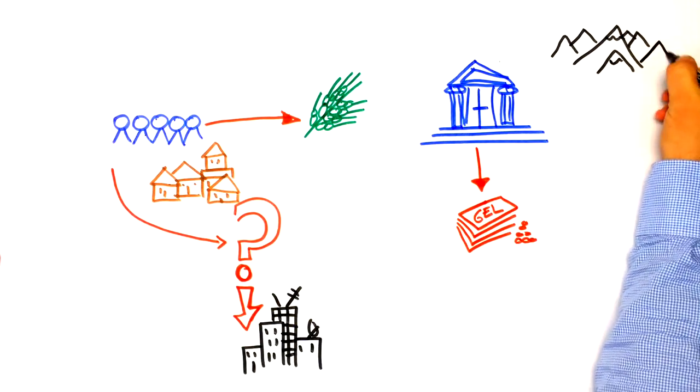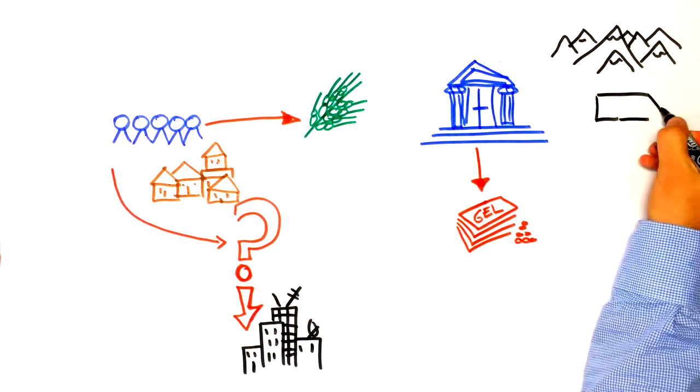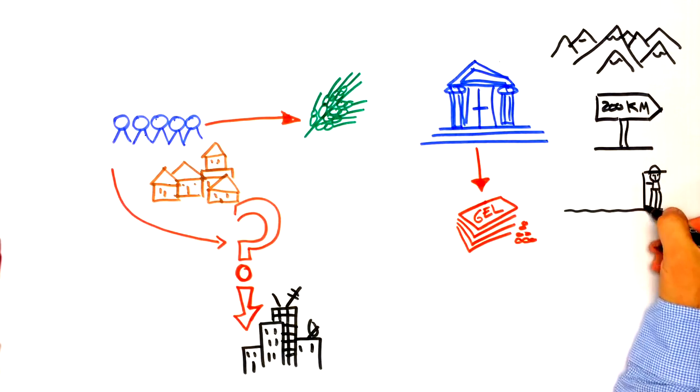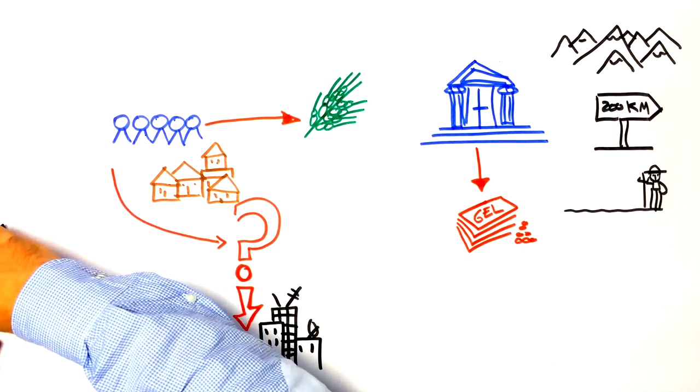First, government can select certain areas as priority areas for these policies, like mountainous areas, or areas which are isolated and remote, or areas with very low population density.